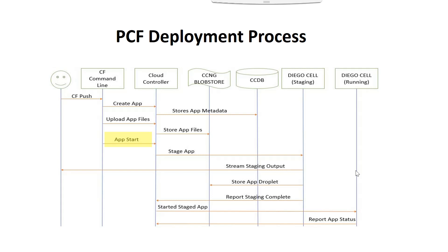So if it is a Java application it will find the Java buildpack, download it, and then create a JVM around it, and then create a droplet which will consist of the application as well as the runtime environment and upload it into the blob store. In an Angular application it will do the same — it will use the static file buildpack which will use the Nginx server and create the runtime environment around that, create the droplet, and upload it into the blob store.